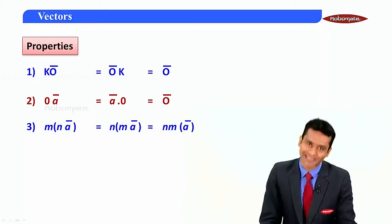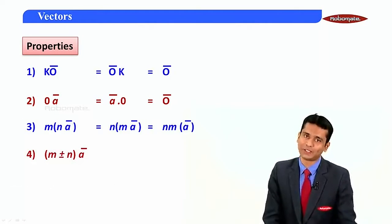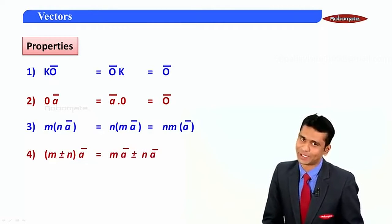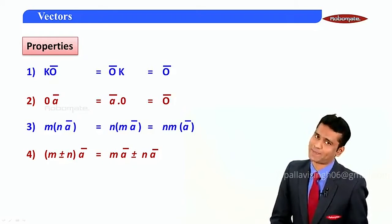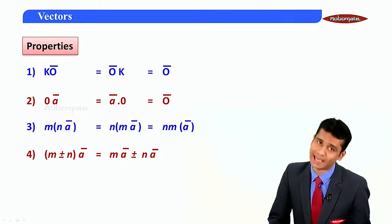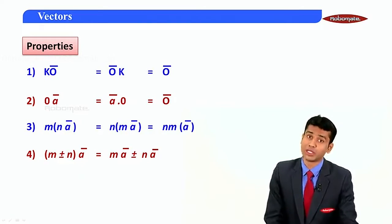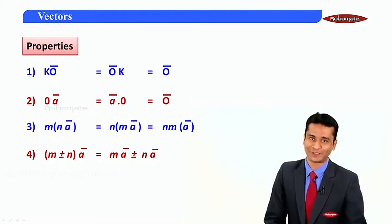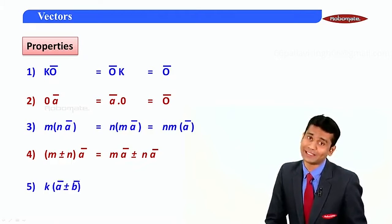The next property says (m+n) into a-bar, or (m−n) into a-bar, is equal to m·a-bar plus n·a-bar, or m·a-bar minus n·a-bar. For example, (two plus three)·a-bar is equal to two·a-bar plus three·a-bar, or (three minus two)·a-bar is equal to three·a-bar minus two·a-bar.